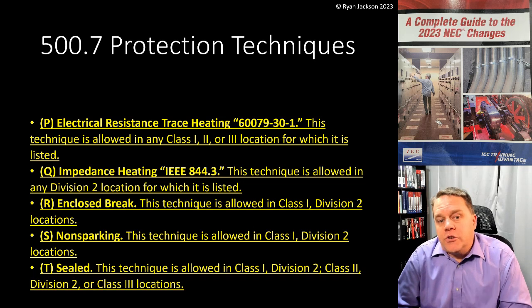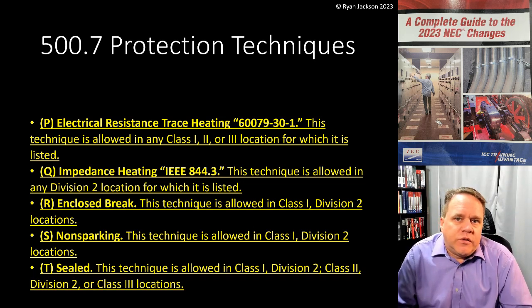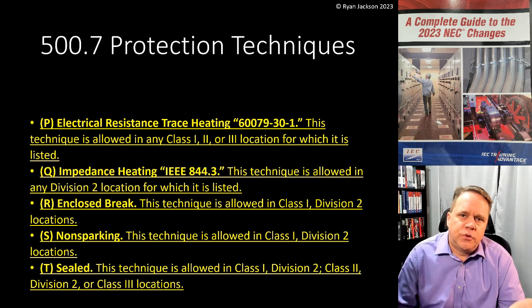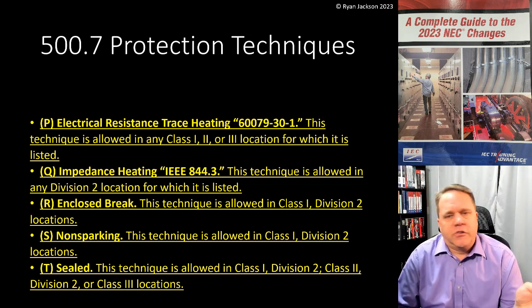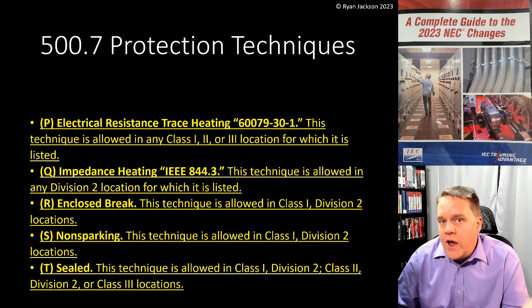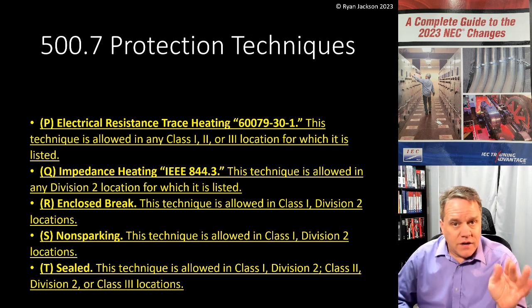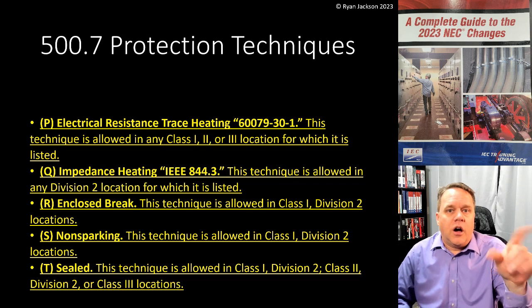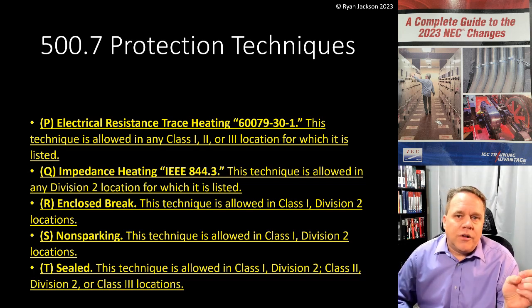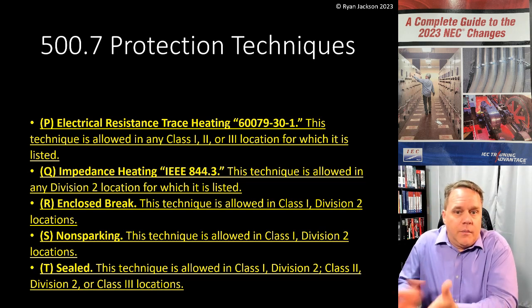We also added a bunch more protection techniques. Historically the list included explosion-proof, dust ignition-proof, dust tight, combustible gas detection systems, non-incendive circuits, intrinsically safe wiring — all of these different protection techniques. At the end of that list it also said other techniques can be used under special permission.